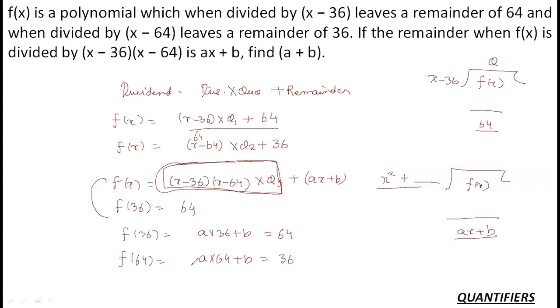Now, this is the first equation, this is the second equation. I have basically two linear equations with me and I have simply to solve this. 64a plus b is 36, 36a plus b is 64. If I subtract, I will get 28a is equal to minus 28. a is equal to minus 1. If a is equal to minus 1, I will substitute it here. I will get b is equal to 100. So a is minus 1 and b is 100. I can say the overall remainder would be minus x plus 100. A value of minus 1 and b equals 100.